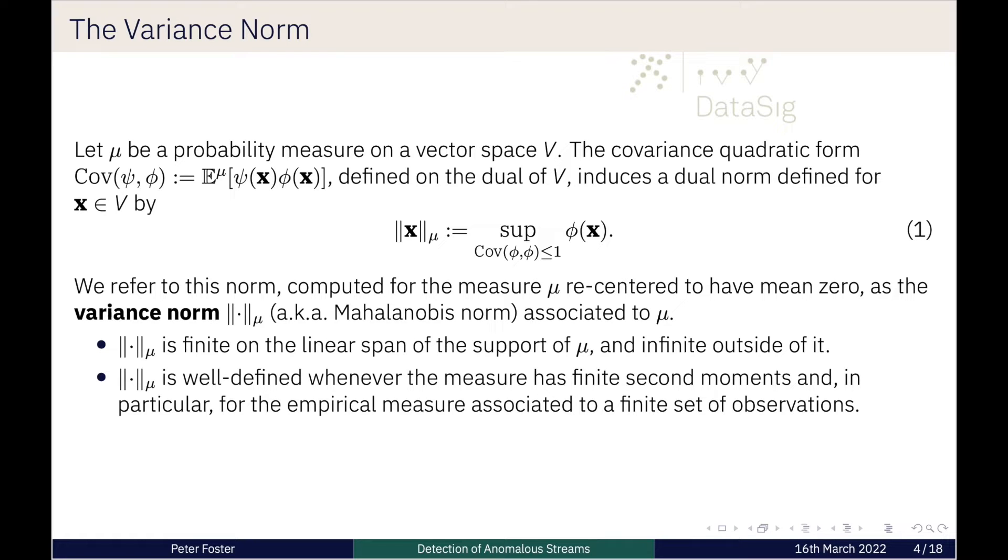The way we go about this is as follows. We take a probability measure on some vector space and then consider the dual. We map our observations into that dual, take the dual mapped observation X and take the supremum over that where we're taking the covariance and restricting it to be less than or equal to one. One way to conceptualize that is we've got our vector-valued observations and we transform this to require that the observations are spherical. This is what we term the variance norm, or the Mahalanobis norm associated with the measure μ.